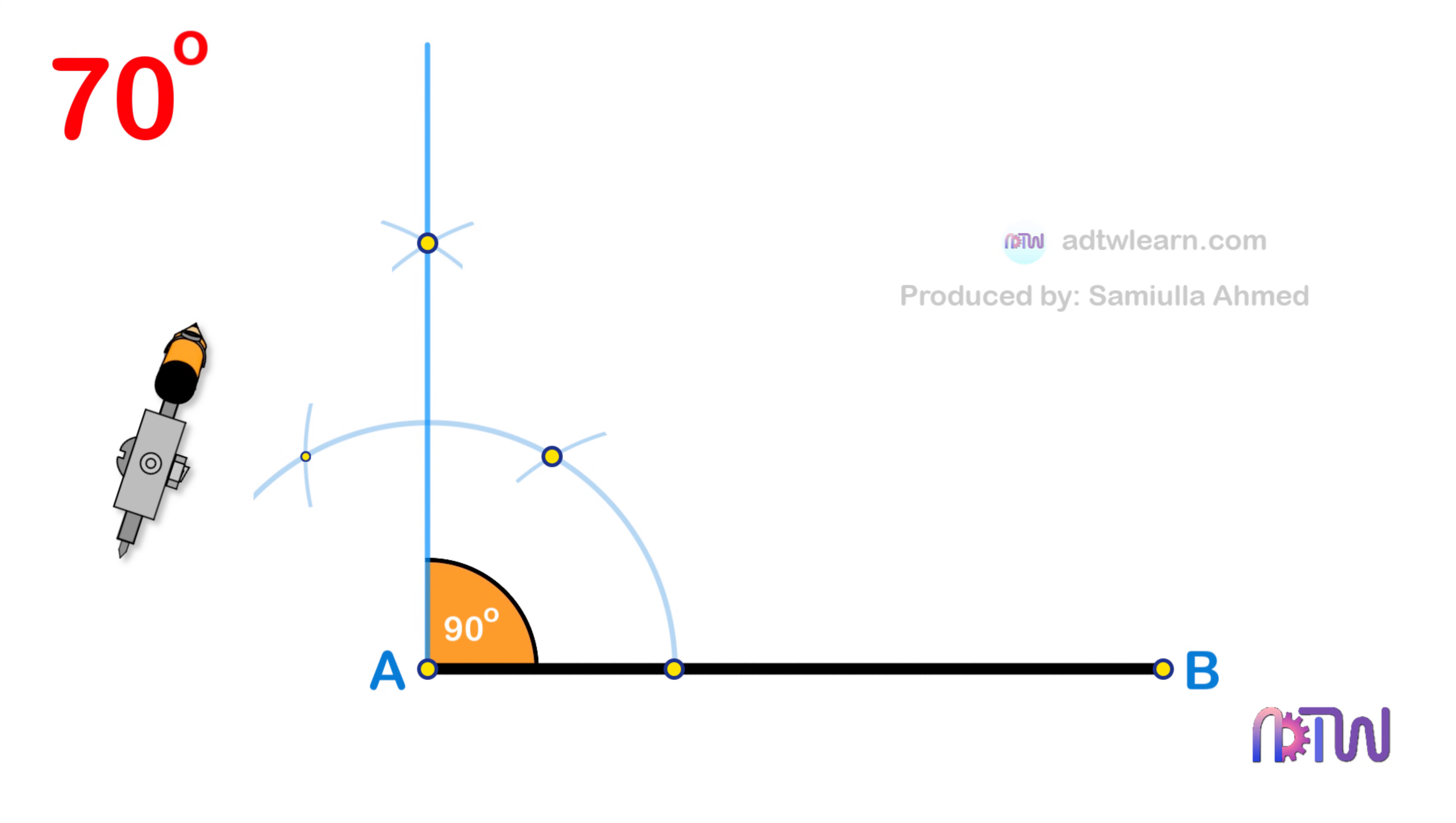After this, to get the 70 degree angle, take a compass and adjust it to the length between these two points and using this point as the center draw an arc as shown. Next, adjust the compass to the length between these two points.